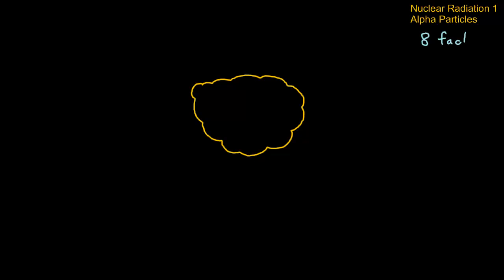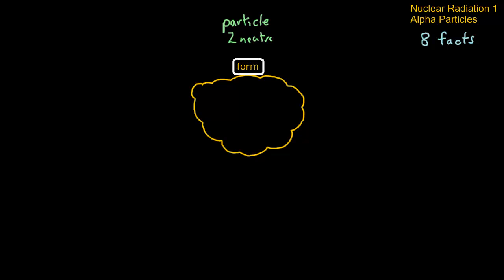For each one we're going to have eight facts. The first is the form of alpha particles. They are a particle and consist of two neutrons and two protons. We can show this with two protons and two neutrons — this is what we call an alpha particle.